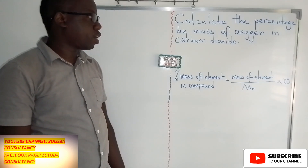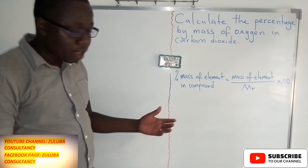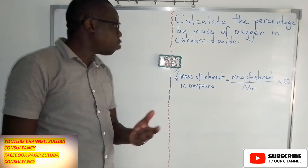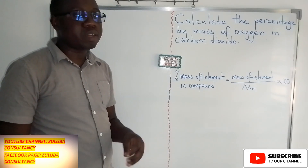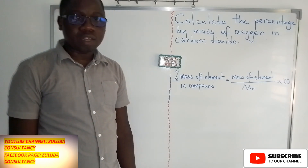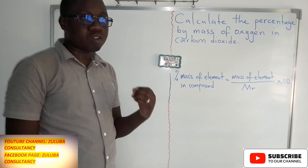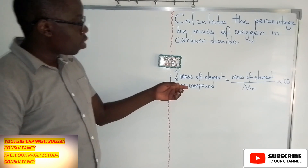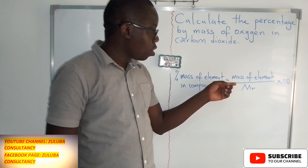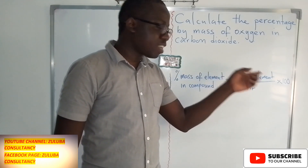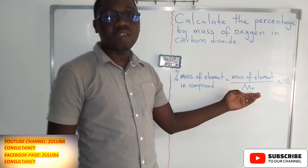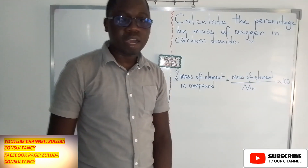Welcome back to Zuluwa Consultants. In this video, we want to learn how we calculate the percentage by mass of an element in a compound. The formula we use is: percentage by mass of an element in a compound equals the mass of that element in the compound divided by the Mr of that compound, multiplied by 100.